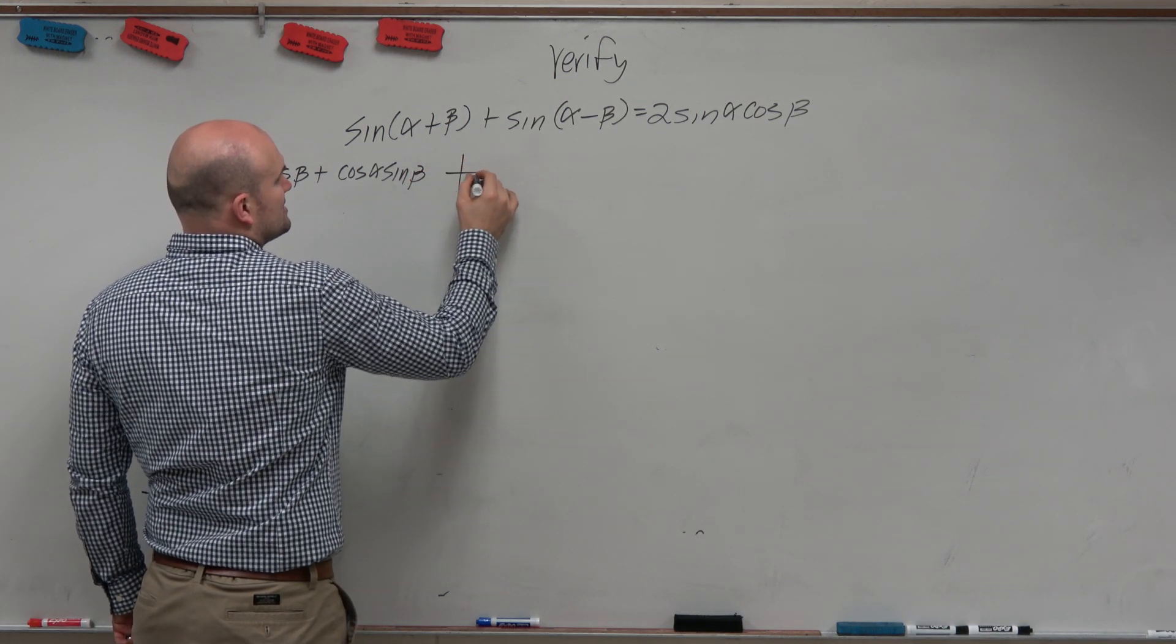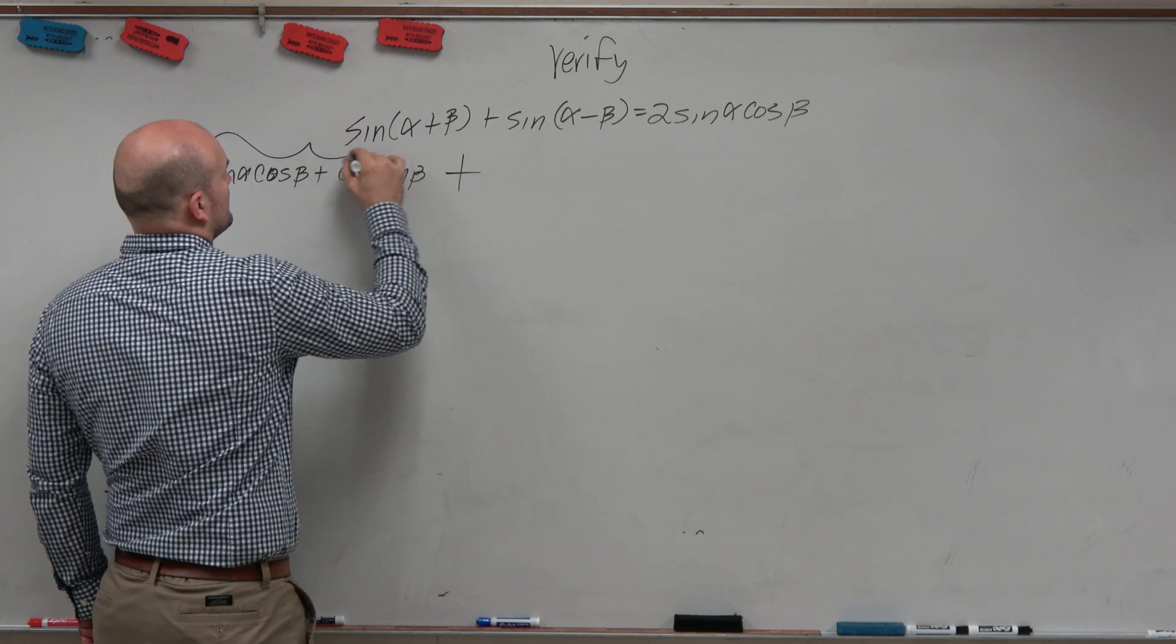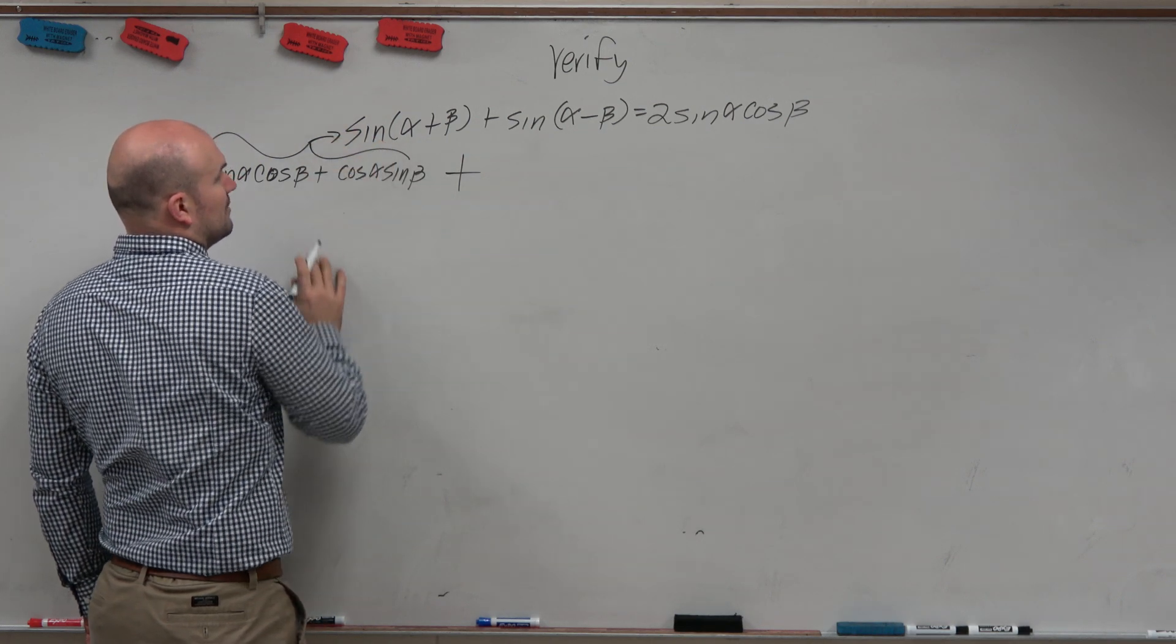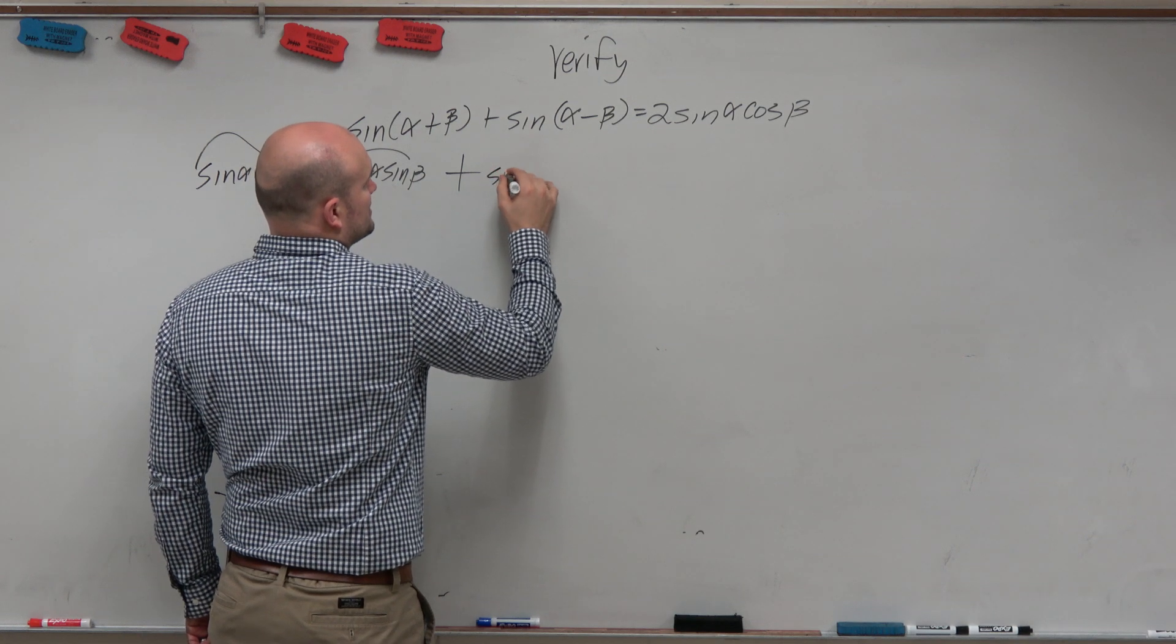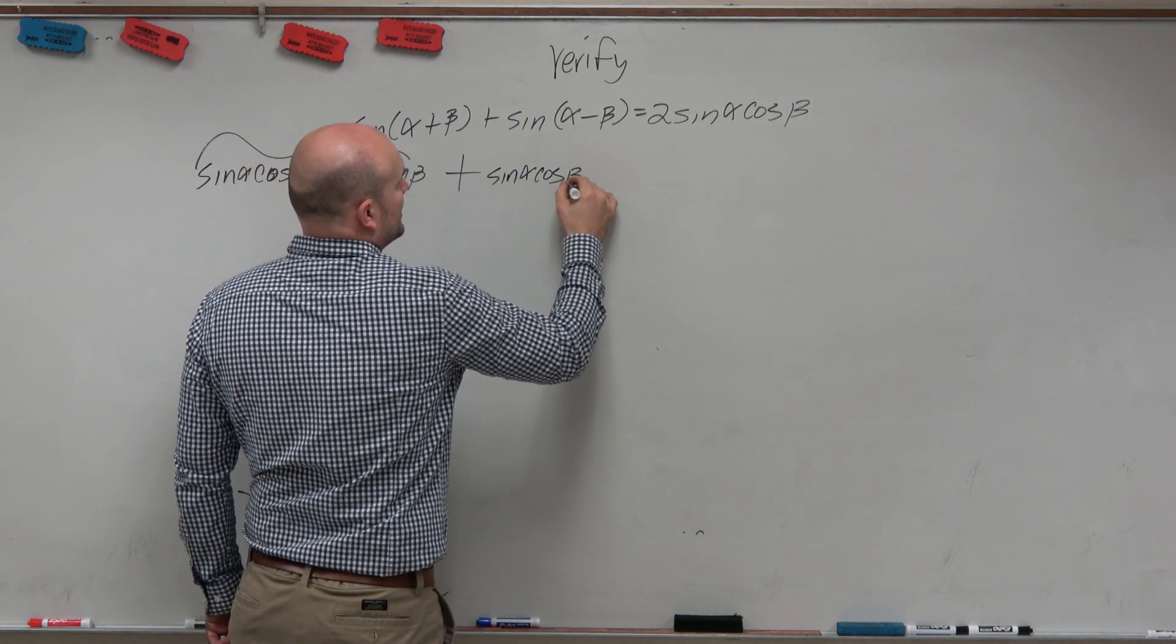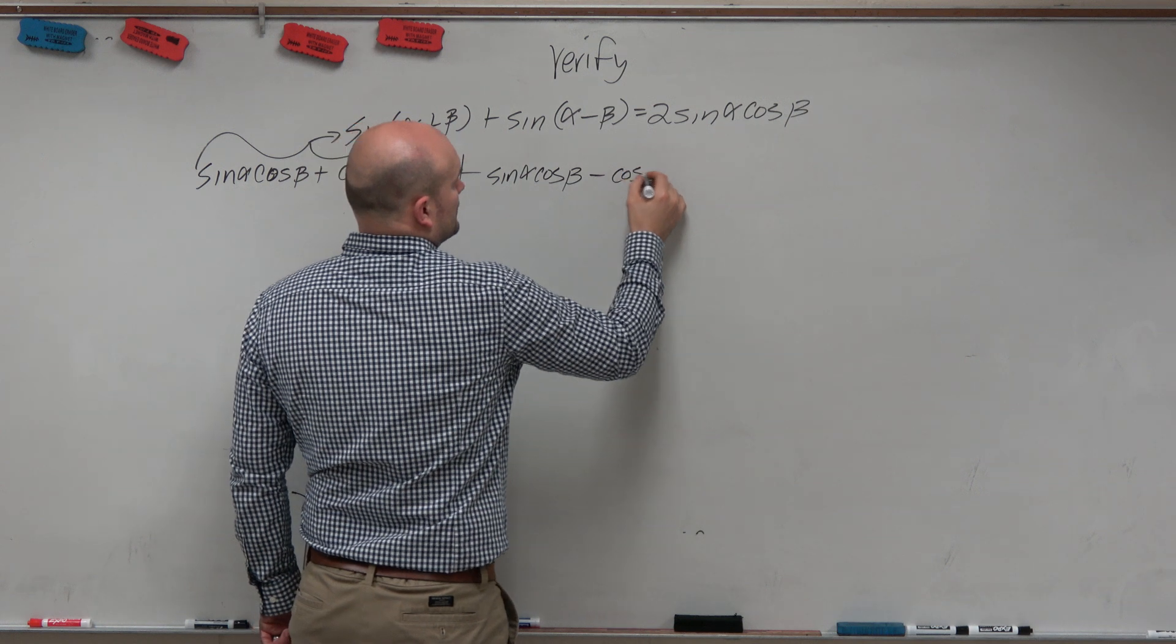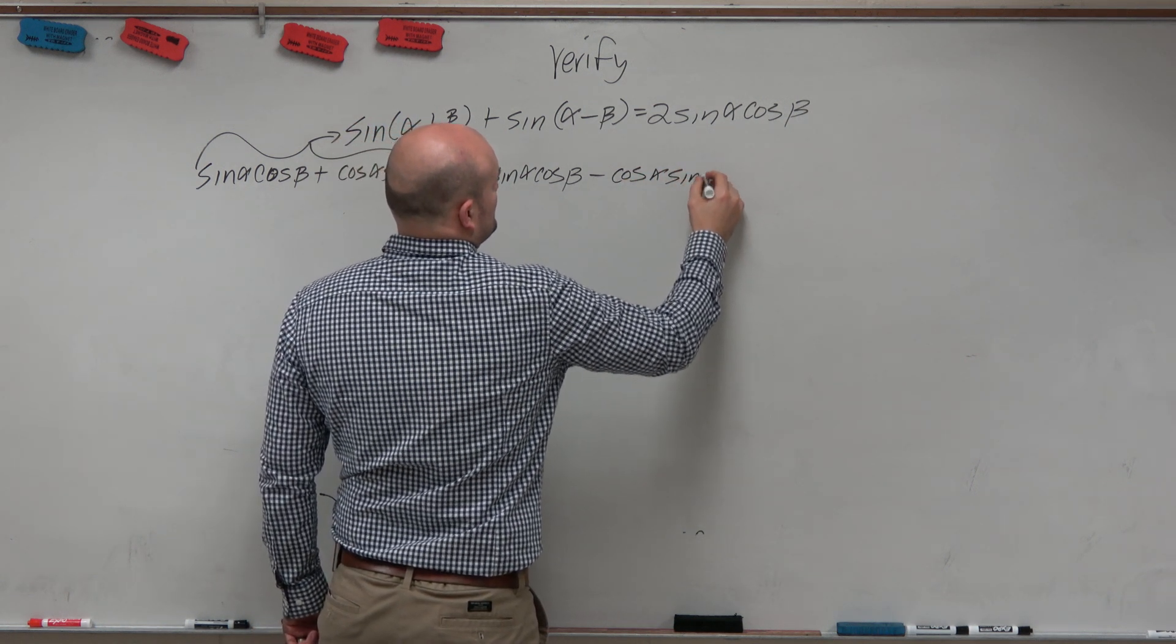And then here is my plus. So this was that one, right? And then now I'm going to do this one. So this is sine of alpha cosine of beta minus cosine of alpha sine of beta.